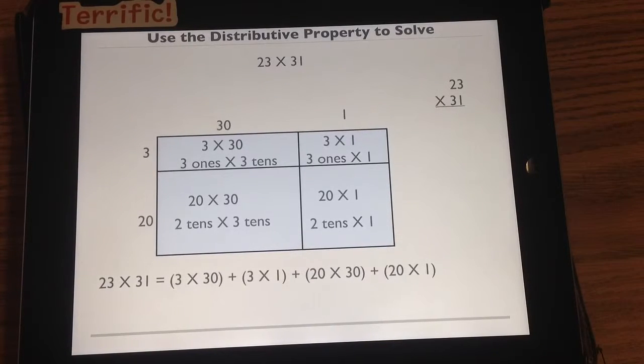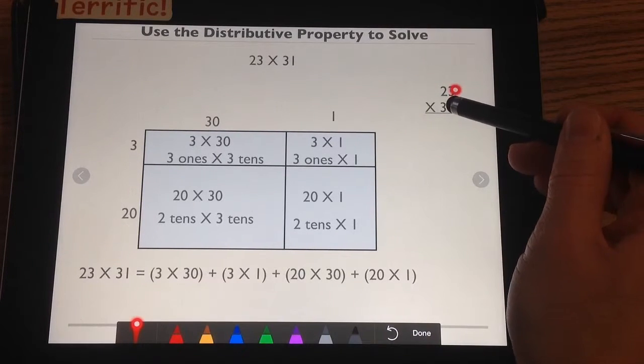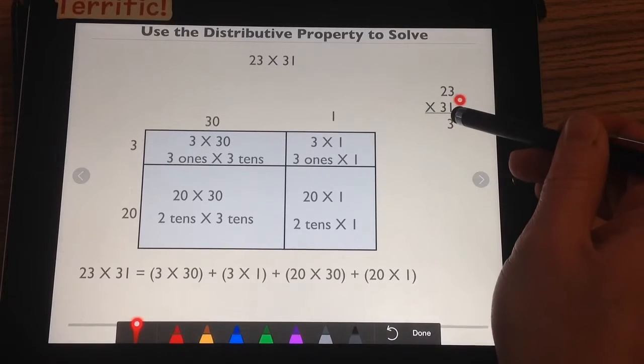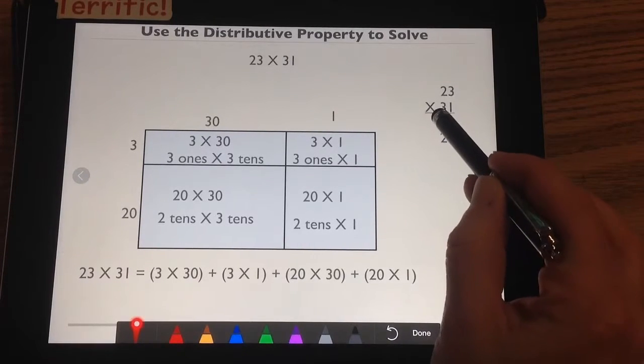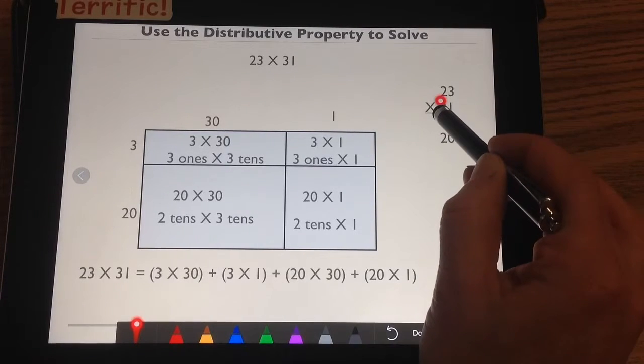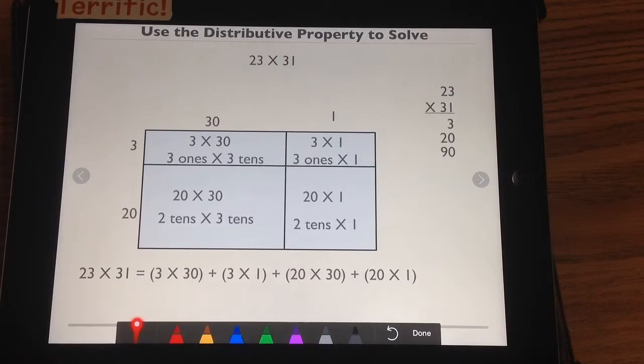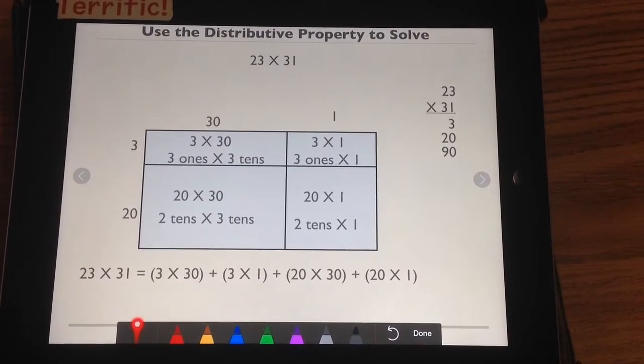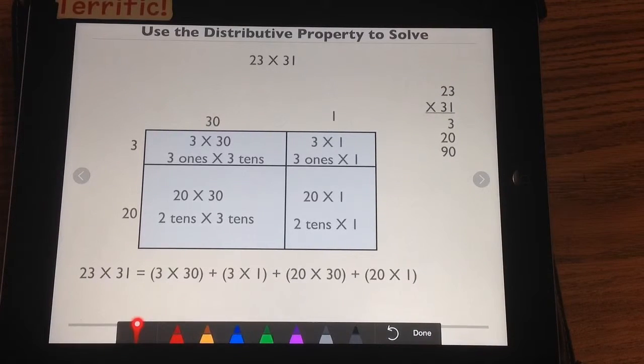Here is our problem set up vertically. And what I'm going to say to myself is 1 times 3 ones is 3 ones. 1 times 2 tens is 2 tens or 20. Now is where it gets tricky. Listen to my words. Where is this 3? What place? Yes, in the tens place. 3 tens times 3 ones is 9 tens, which is 90. It's not just 9. You have to say unit form. And our last one is 3 tens times 2 tens, which gives me 6 hundreds.